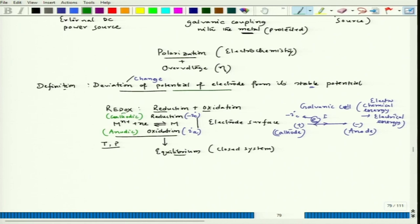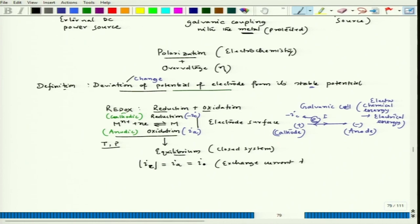If we allow this closed system to reach equilibrium at fixed temperature and pressure with only M^(n+) and M species, at some point the rate of the forward and backward reactions will be the same. At that time |i_c| = i_a = i₀, where i₀ is called the exchange current density. The anodic current i_a represents positive current, and we use current density because the rate is proportional to current density, not current.